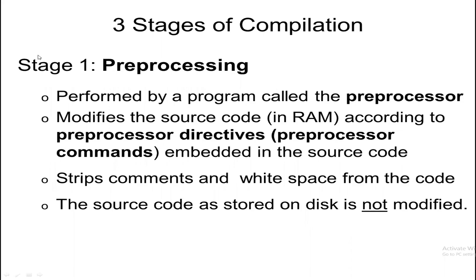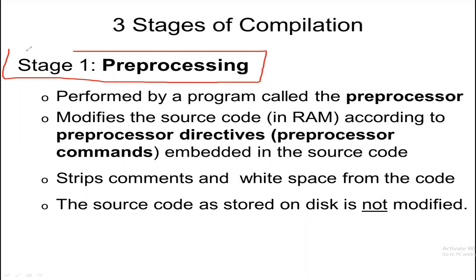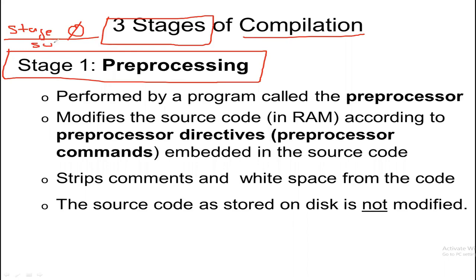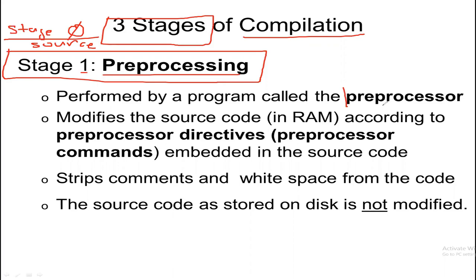Now, stage one is preprocessing. In general, we have three stages for compilation. Stage zero is where you already write the source code. Stage one is preprocessing, where we use a special software called the preprocessor, which is part of the integrated development environment.